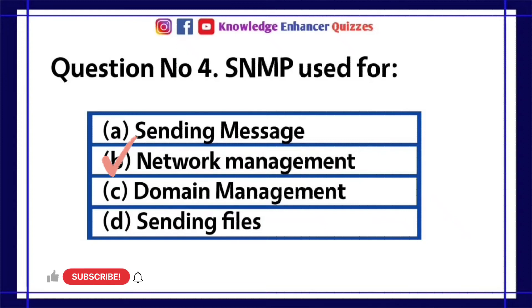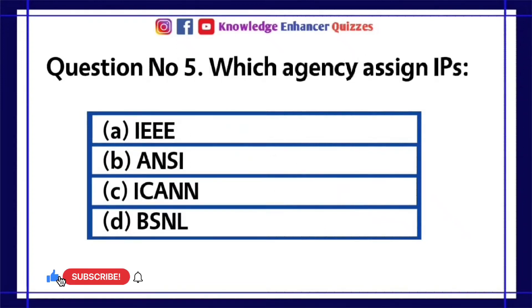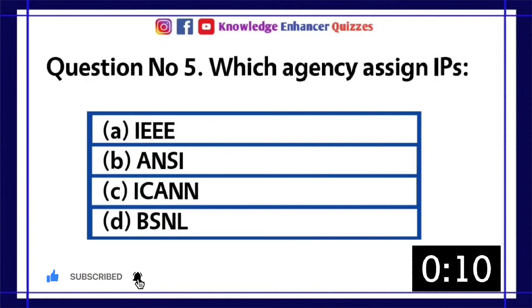Option B is the right answer. Question number 5: Which agency assigns IPs? A. IEEE. B. ANSI. C. ICANN. D. BSNL.